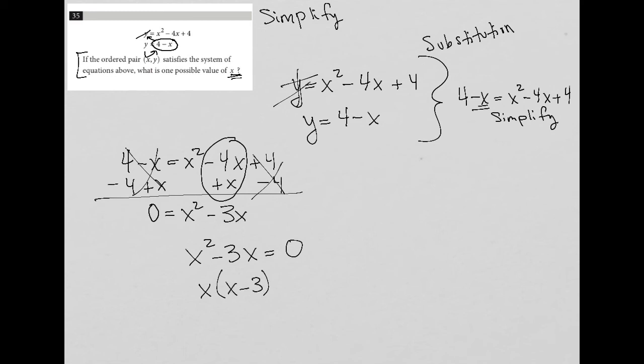Hopefully you see how those things are equivalent. And once I factored it in that way, I'd say, well, how do I get X times X minus three to equal zero? Well, either X is equal to zero. Because if this is equal to zero, then zero times all of this is going to also be zero. So that's one option.